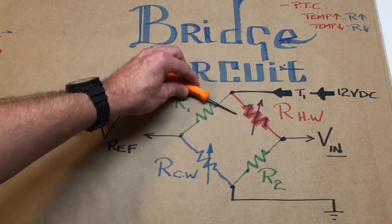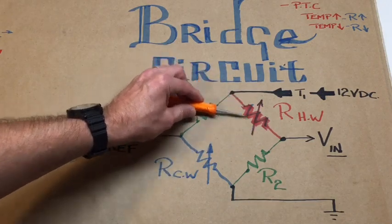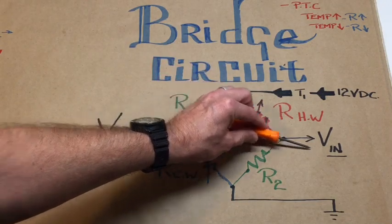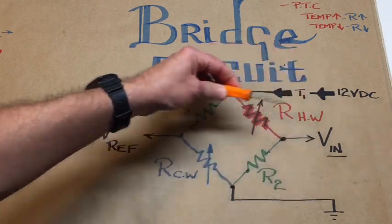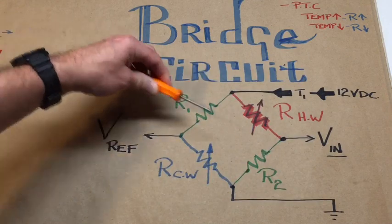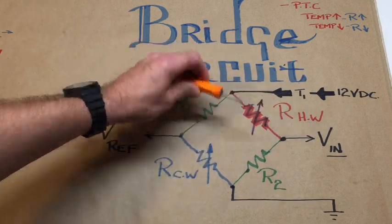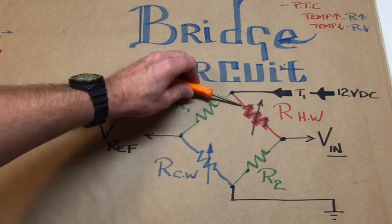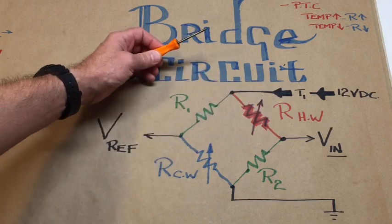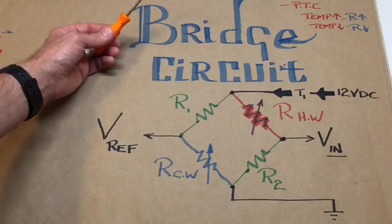So this resistance value would actually drop. Because the resistance would drop the voltage at this particular point, the VN reference point would go up again exceeding the VREF and we'd have a toggling action back and forth in order to regulate the current that's actually going through the bridge. Simple, but at the same time, brilliant.